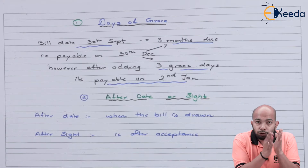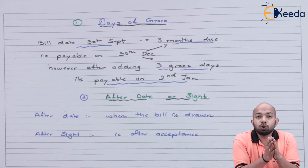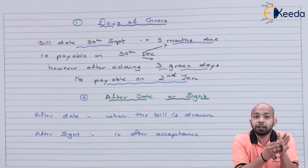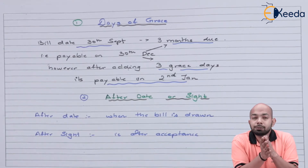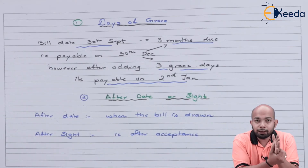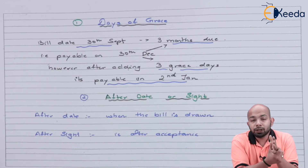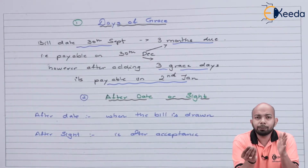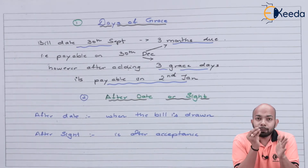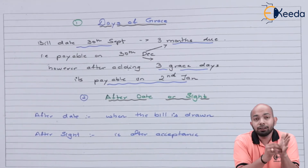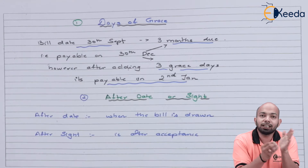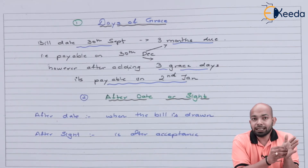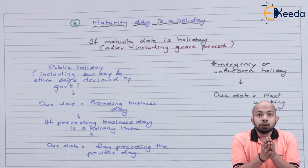After date basically means the calculation starts from when the bill is first drawn. After sight means the calculation starts from when the bill is accepted. For example, if the bill was drawn on 29th January and accepted on 30th January: if it is after date, the due date is calculated from 29th January; if it is after sight, it is calculated from 30th January — for whatever time frame is given, whether one month or three months.